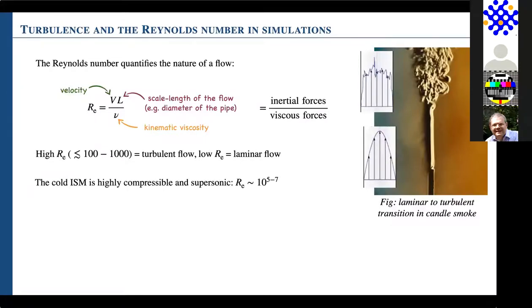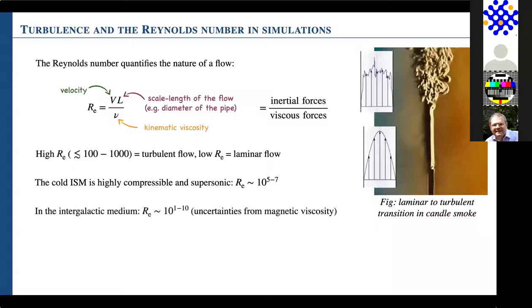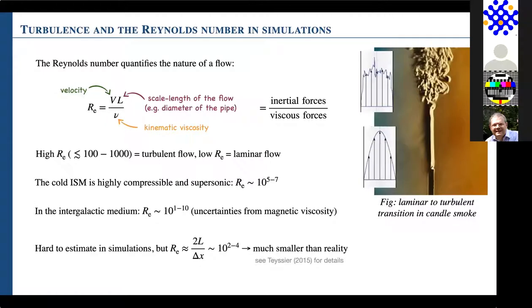For the cold interstellar medium, unlike water it's highly compressible and supersonic, so we get Reynolds numbers of order 10⁵ to 10⁷. For the intergalactic medium it could be up to 10¹⁰, though it's really uncertain because we don't fully understand the magnetic viscosity. When we compare these flows in reality to what we put in simulation, the rule of thumb for estimating the Reynolds number in simulation is twice the scale length divided by resolution — giving something like 100 to 10,000 for a typical galaxy simulation, which is much smaller than reality. So in your simulation you're not capturing the same physical nature of the turbulent flow.